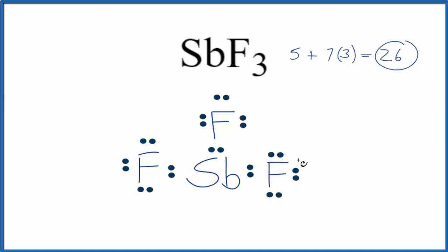So far, we've used 24 valence electrons. Each of the fluorine atoms has octets, so they're in good shape. But the antimony does not have an octet.